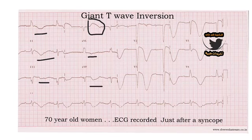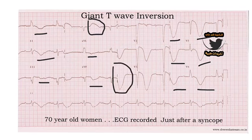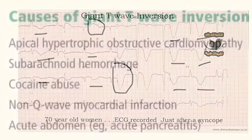Negative in AVR, negative in AVF, negative in leads V1, V2, V3, V4, V5, V6 — all negative. As we see here, this is what we know as Giant T wave inversion.